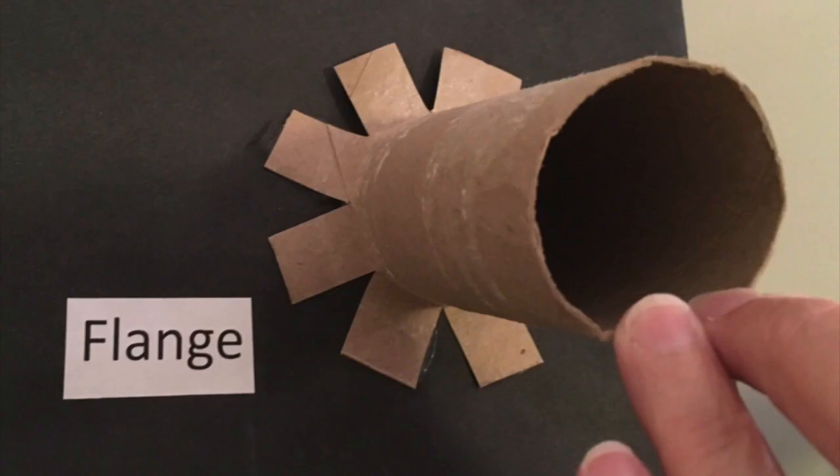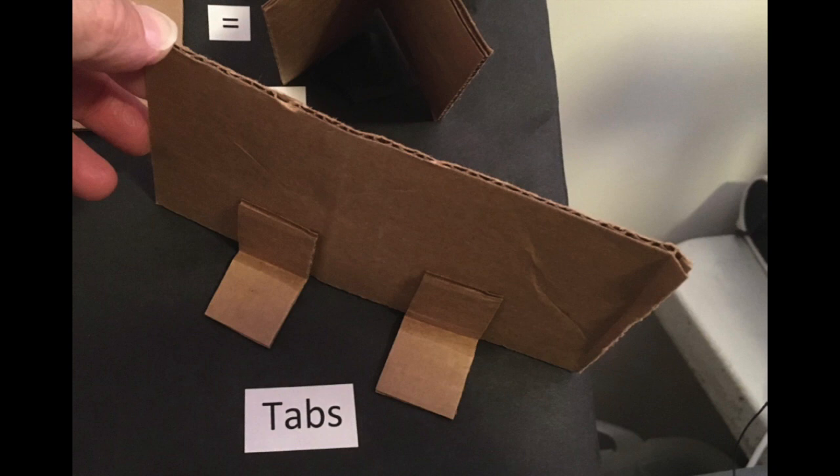If you're going to use a toilet paper tube, if you make a little cut all around the bottom of one end, you can spread those out. And finally, you can add extra tabs to things to make something stand up straight.